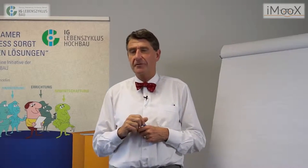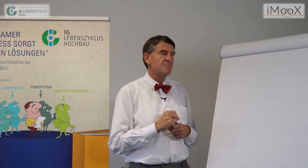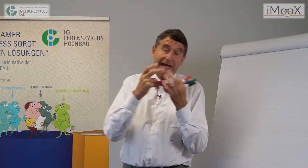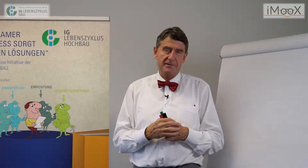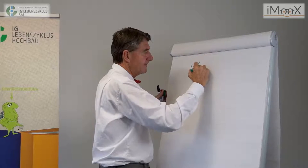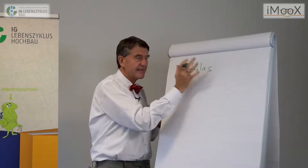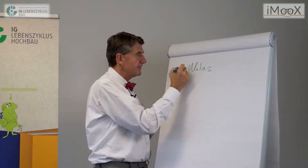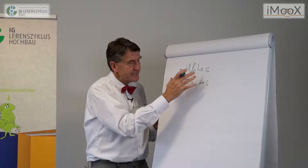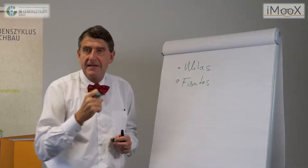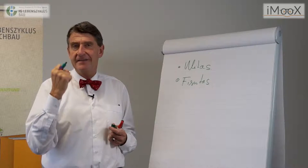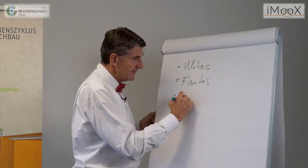Wenn wir heute über Lebenszyklus oder nachhaltiges Bauen reden, dann ist das ein Begriff, den Vitruv vor 2000 Jahren mit drei Kriterien wunderschön beschrieben hat. Das erste Kriterium ist Utilitas – das Gebäude muss einem Zweck dienen. Das zweite Kriterium heißt Firmitas – ein Gebäude soll mit möglichst wenig substanziellem Aufwand, mit möglichst wenig Ressourcen, möglichst lang diesem Zweck dienen können.